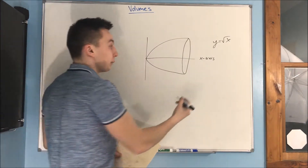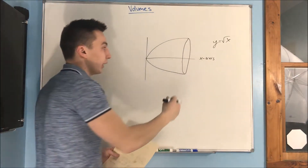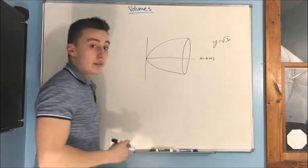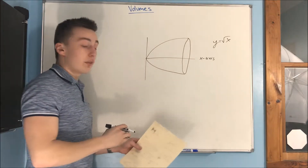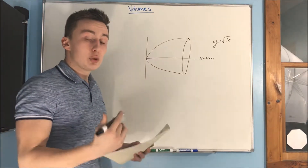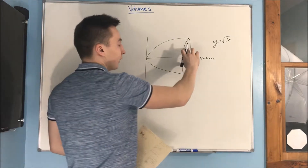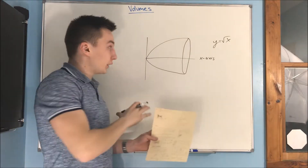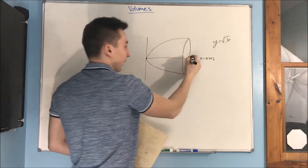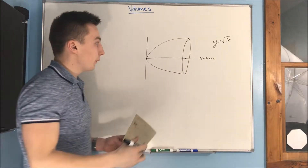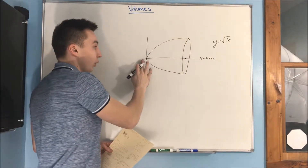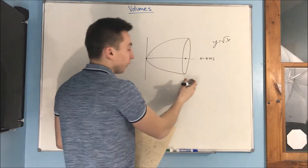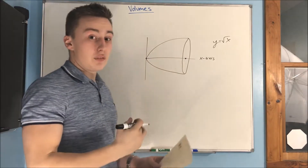How we're going to find the volume here is by looking at the shape of the cross-section. Our cross-sections here are circles, because we're revolving this curve around an axis. Every circle is going to be of a different height, and those heights are changing as x changes. So we're going to integrate across this whole interval, adding up the infinite number of cross-sections, and that's going to give us our volume.